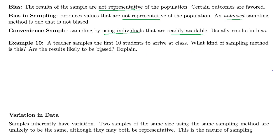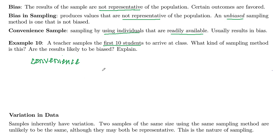For example, a teacher samples the first 10 students to arrive at class and asks their opinion. That's not a random sample — those first 10 students might be the same 10 students every day, and they may have different characteristics than the rest of the class. It's easy to pick the first 10 students that arrive; the teacher doesn't have to wait until everyone's there or hold up the rest of the class. It's a convenient sample.